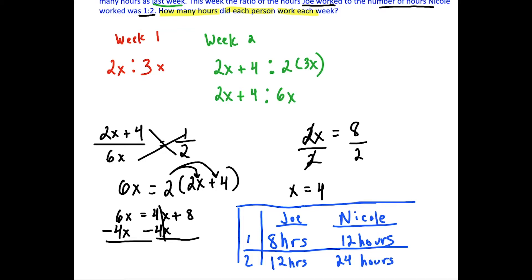We were also told the ratio of hours Joe worked to Nicole worked was 1 to 2 in week two. As a check, if we compare 12 over 24, that reduces to one half. So this checks out, and we can be confident these are the specific number of hours Joe and Nicole worked.